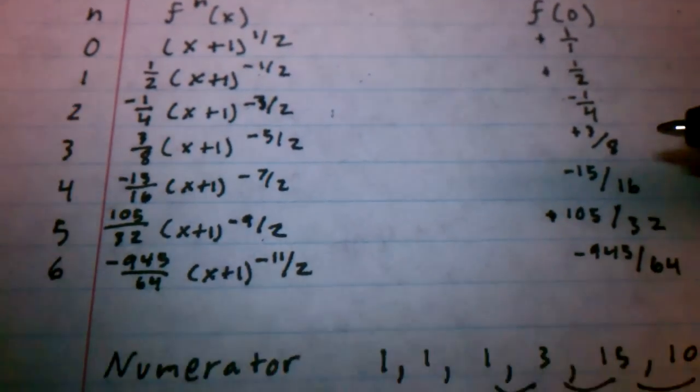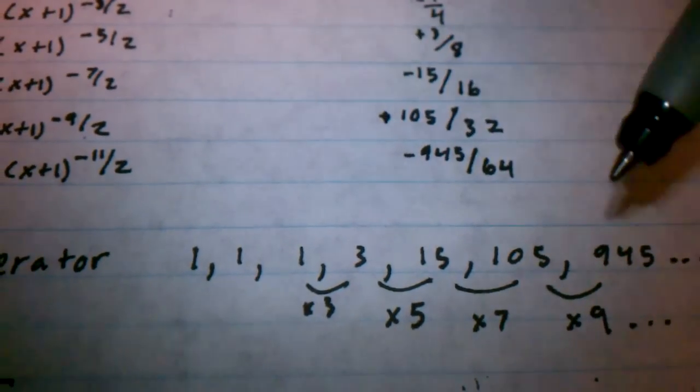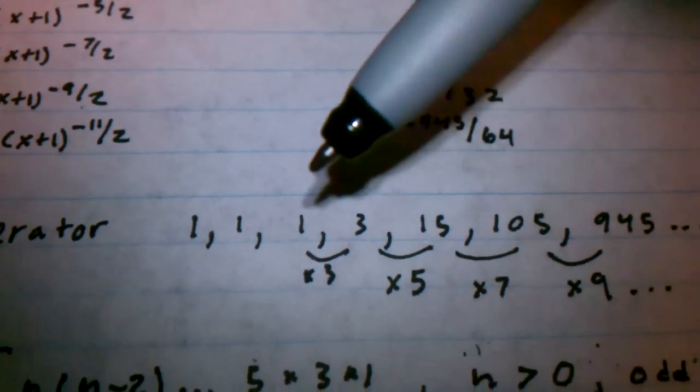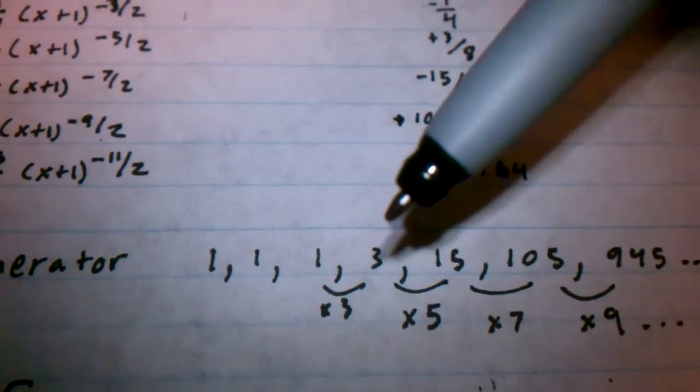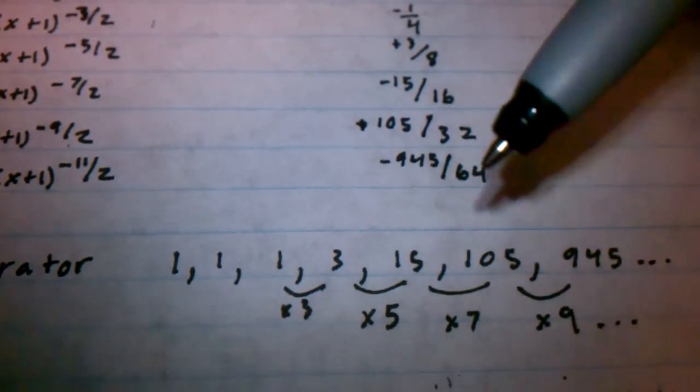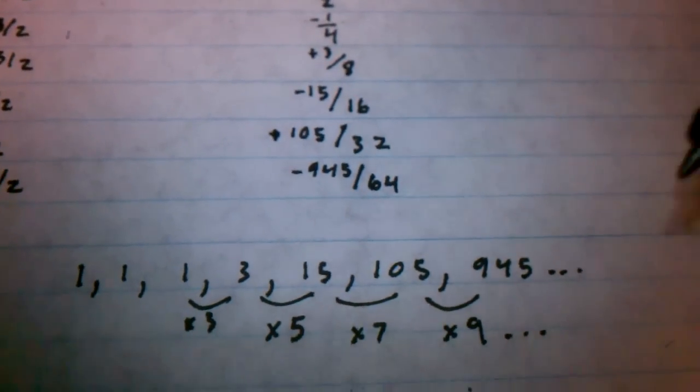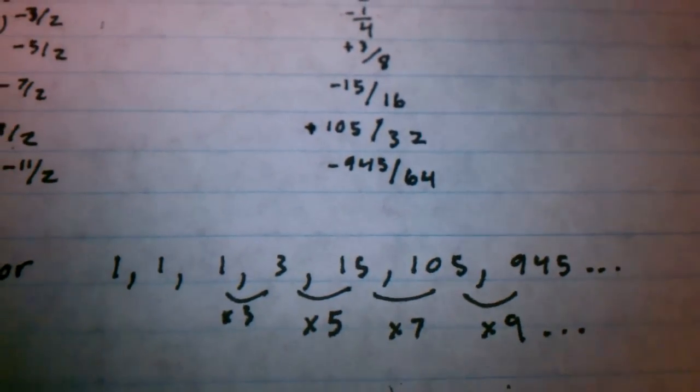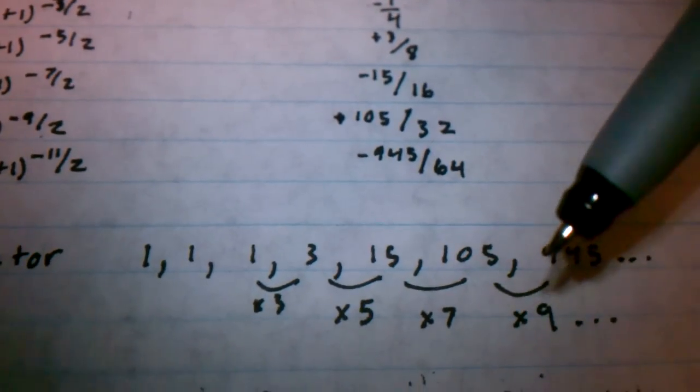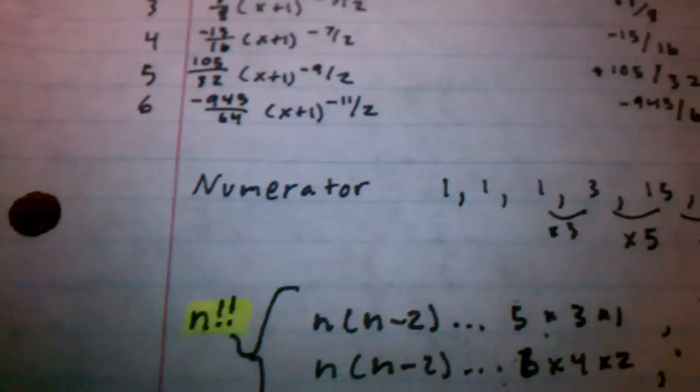So, let's start with the numerator. The numerator, as you see how the number is written out. Right now, we said 1, 1, then 3. So, we multiply by 3 to get here, then multiply by 5, multiply by 7, and then 9. And if you continue on with this function, that same trend continues on. So, this is almost like n factorial, but it skips one.